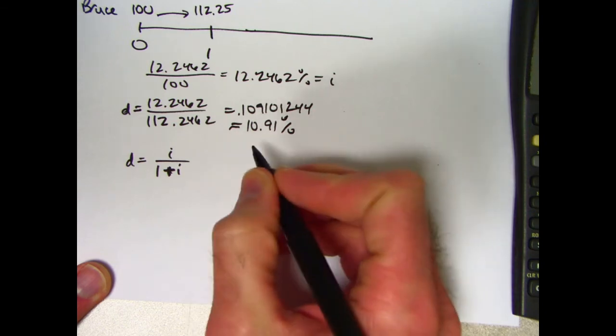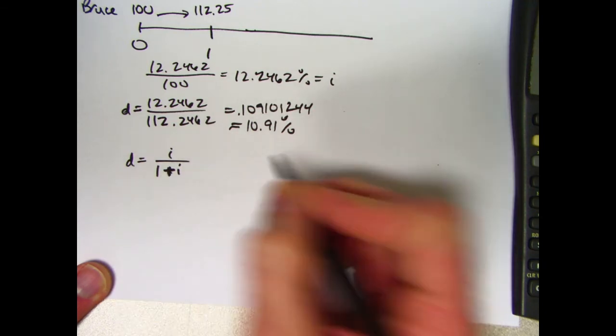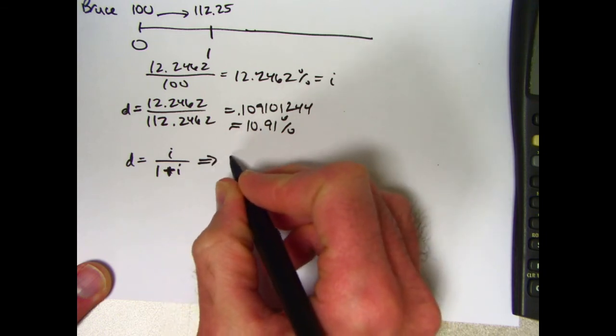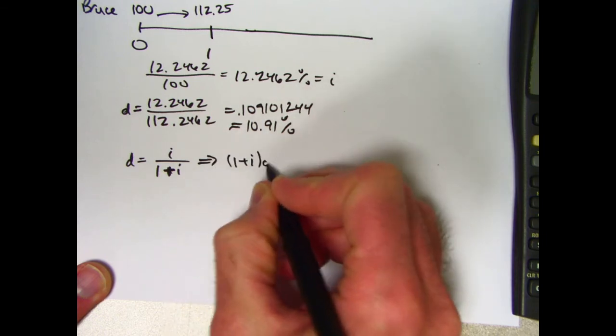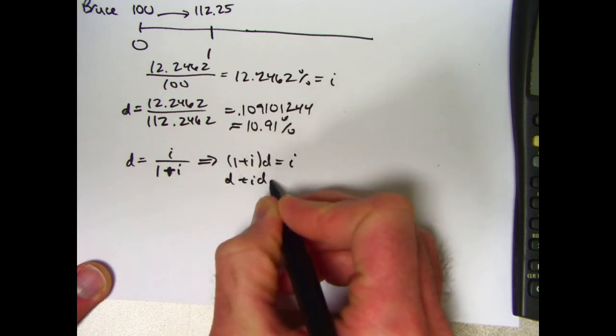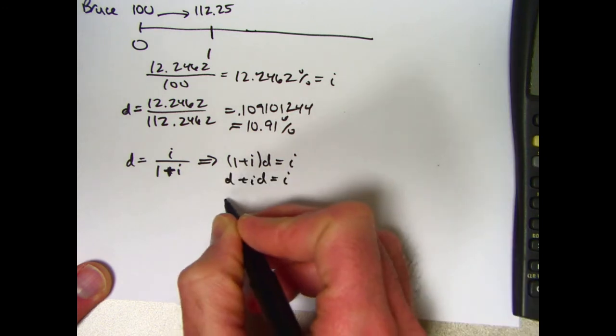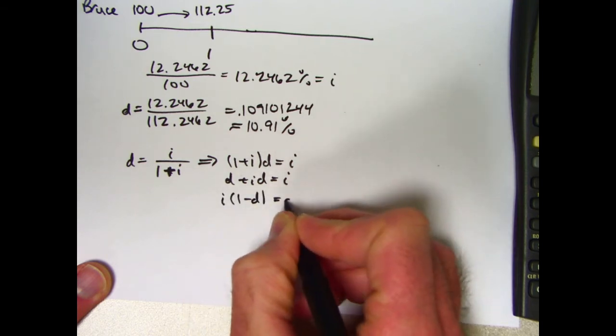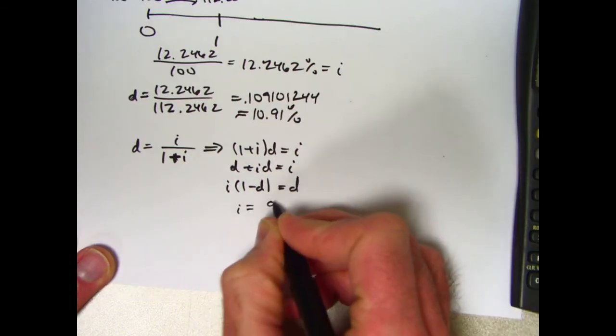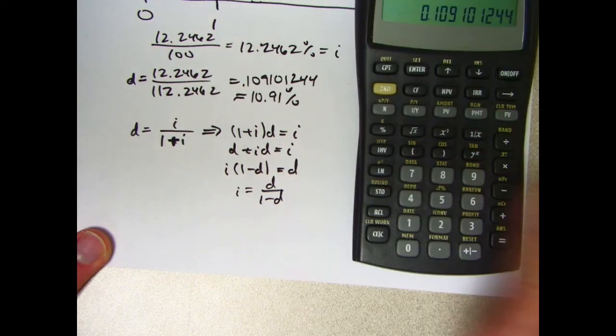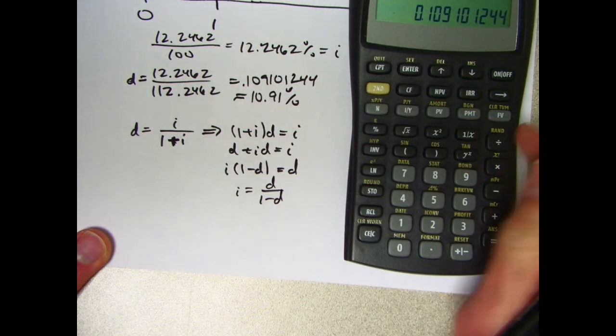You can also use this to solve for a relationship, the inverse relationship, if you like. This implies also that 1 plus i times d equals i. So d plus id equals i. We can solve for i here as the goal. i times 1 minus d will equal d. And i will be d over 1 minus d. That's another relationship between them.